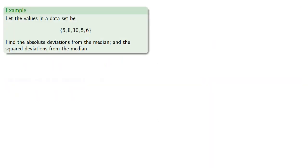For example, let the values in a data set be 5, 8, 10, 5, and 6. Let's find the absolute deviations from the median, and the squared deviations from the median.